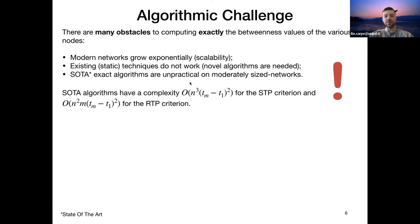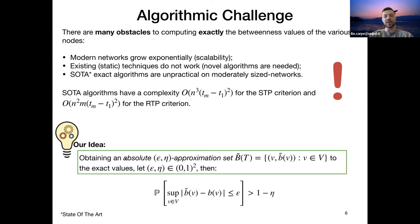Our idea was the following: to obtain an algorithm to compute and keep a so-called absolute epsilon-eta approximation set. This is a set formed of pairs, where each pair is a node and an estimate of the betweenness value of such node, but with fairly rigorous guarantees on such estimates. In particular, we want that the probability that the supremum of the deviations from the estimate that we keep and the actual value of the betweenness centrality stays within epsilon of error is greater than one minus eta. And this is a fairly standard definition in data mining problems.